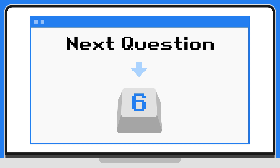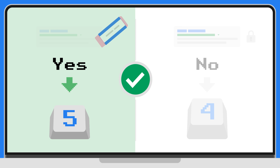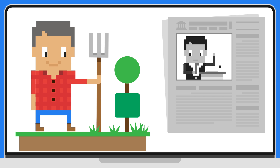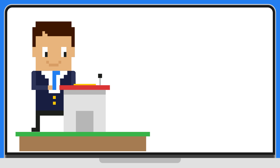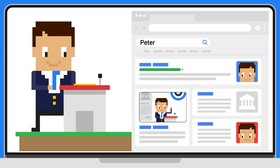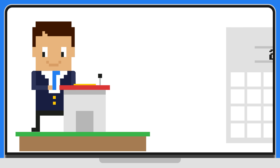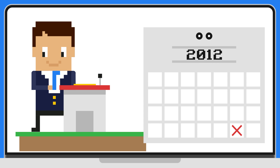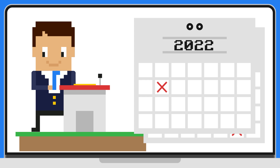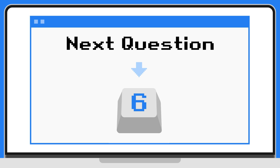If you selected the other answer, you would have been correct. Good job! Peter's political past can now be delisted. Peter has left his public role for good and is no longer active in politics or a similar field. However, if someone is likely to run for election again or is still in the public eye, we'll often keep information available. Another vital consideration is content age — we assess whether the information in the search result is still relevant.